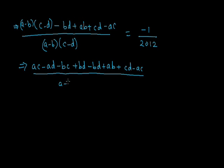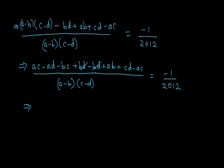Upon (a minus b)(c minus d), that equals minus 1 upon 2012. In this term, plus BD is cancelled out by minus BD, and plus AC is cancelled out by minus AC.